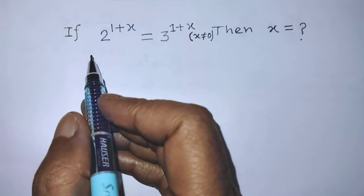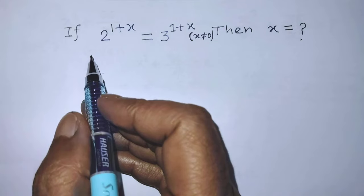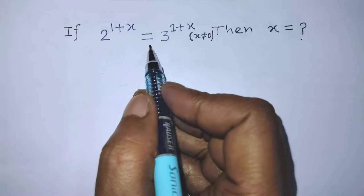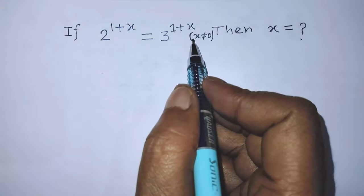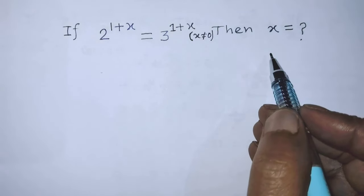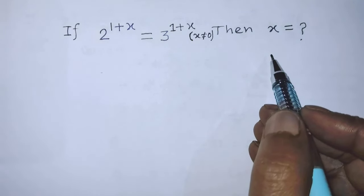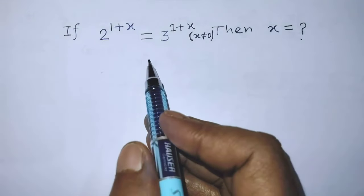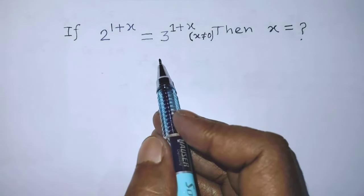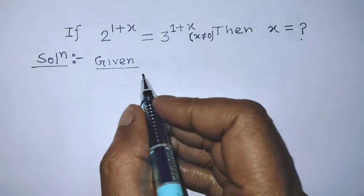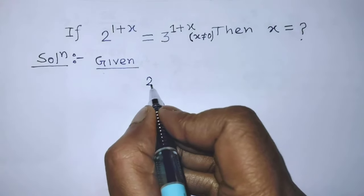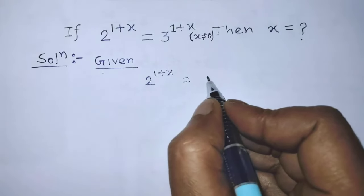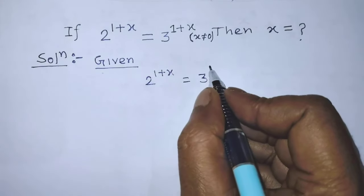Hello guys, you are welcome. Solve this math problem: if 2 to the power 1 plus x is equal to 3 to the power 1 plus x, then find the value of x. Today in this video I am telling you how to find the value of x from this exponential equation. Our given algebraic equation is 2 to the power 1 plus x is equal to 3 to the power 1 plus x.